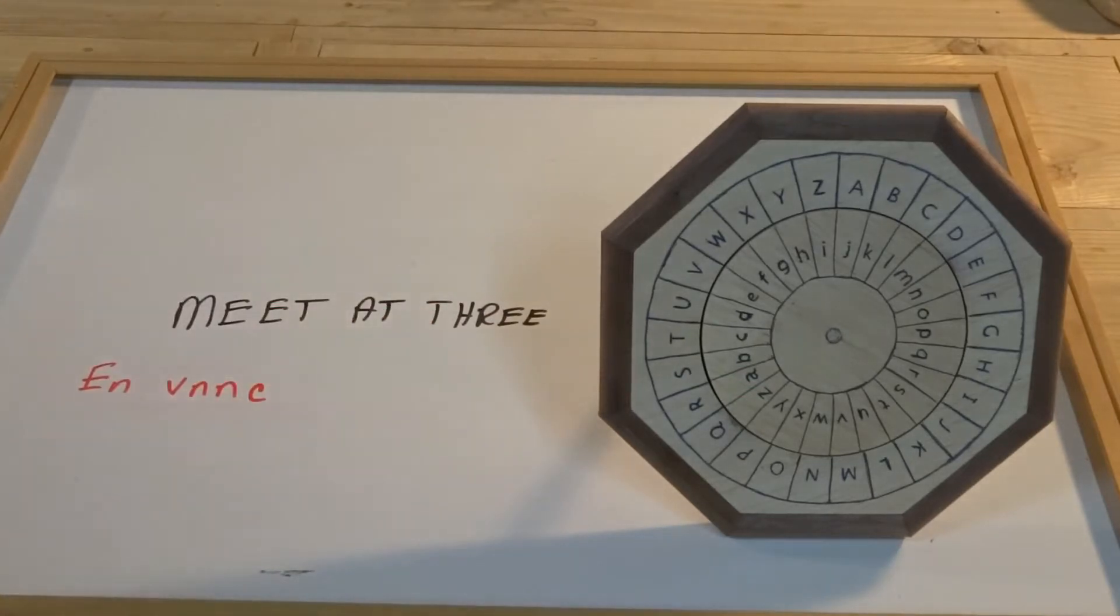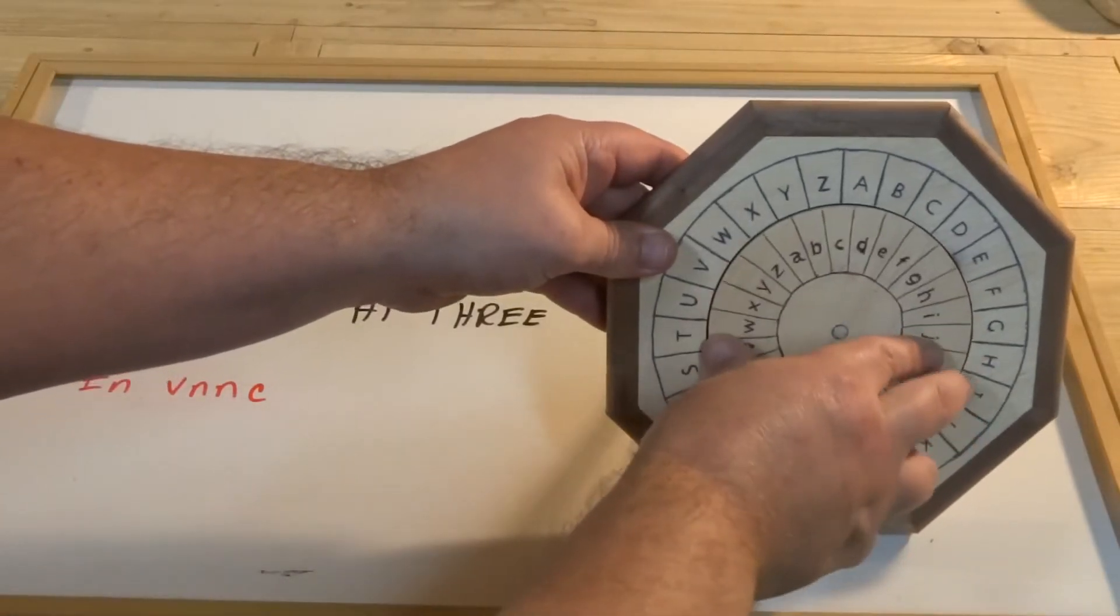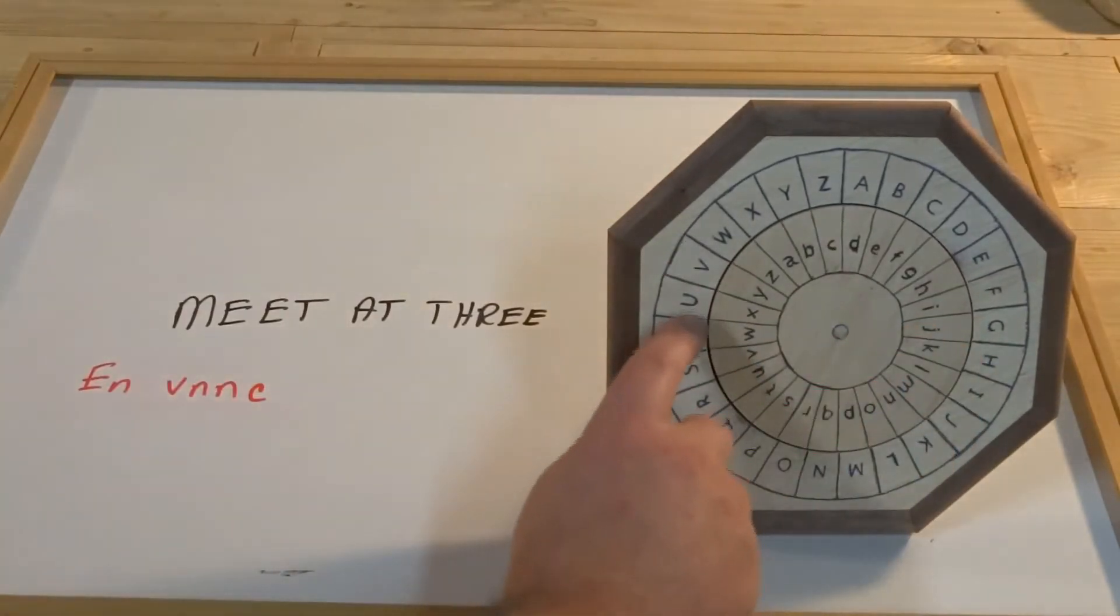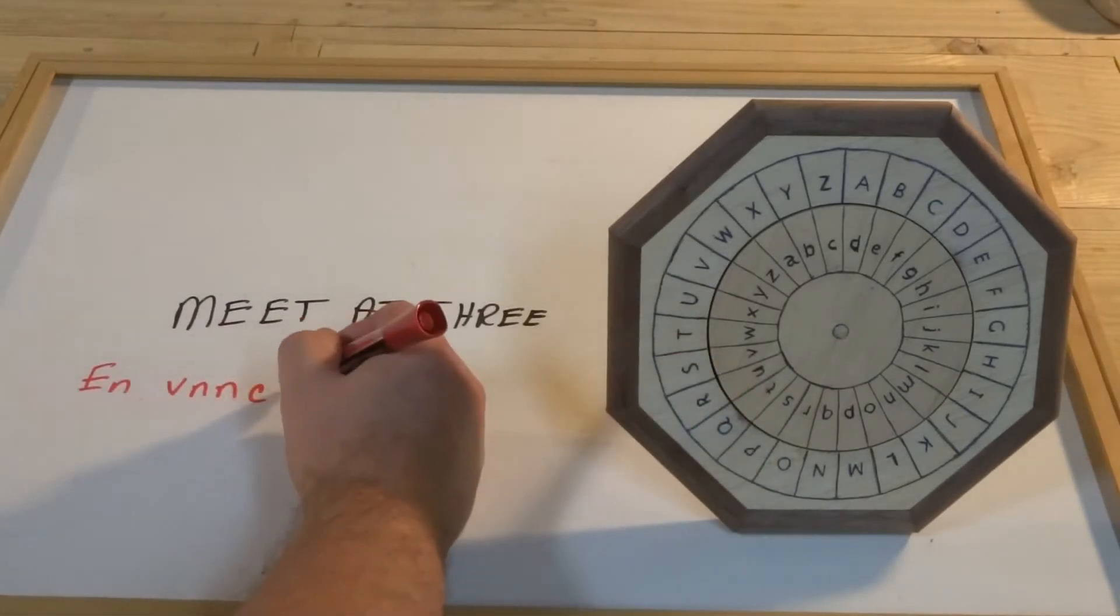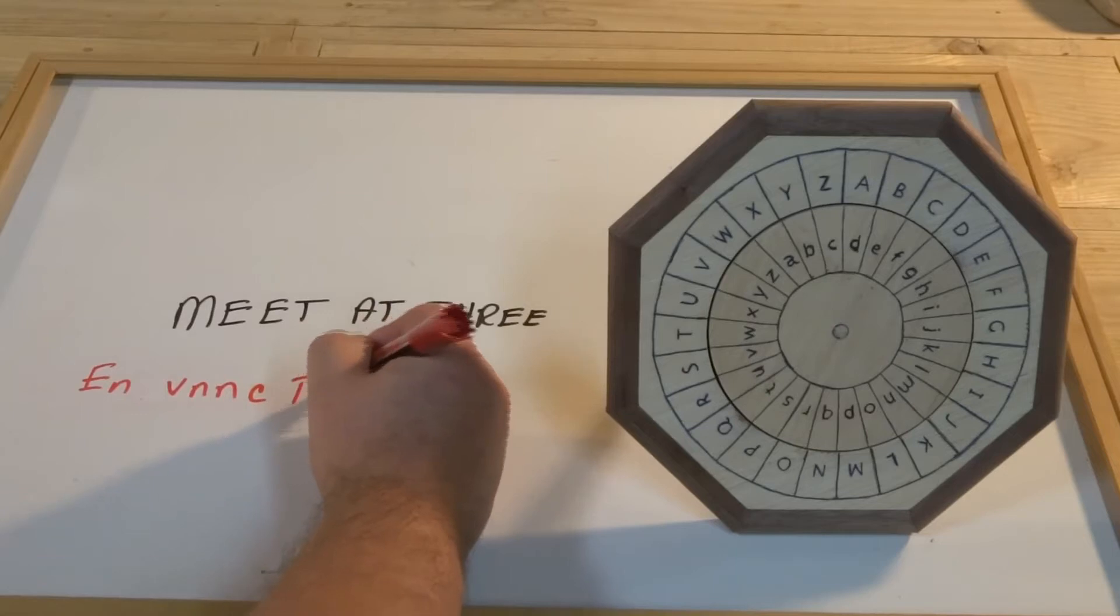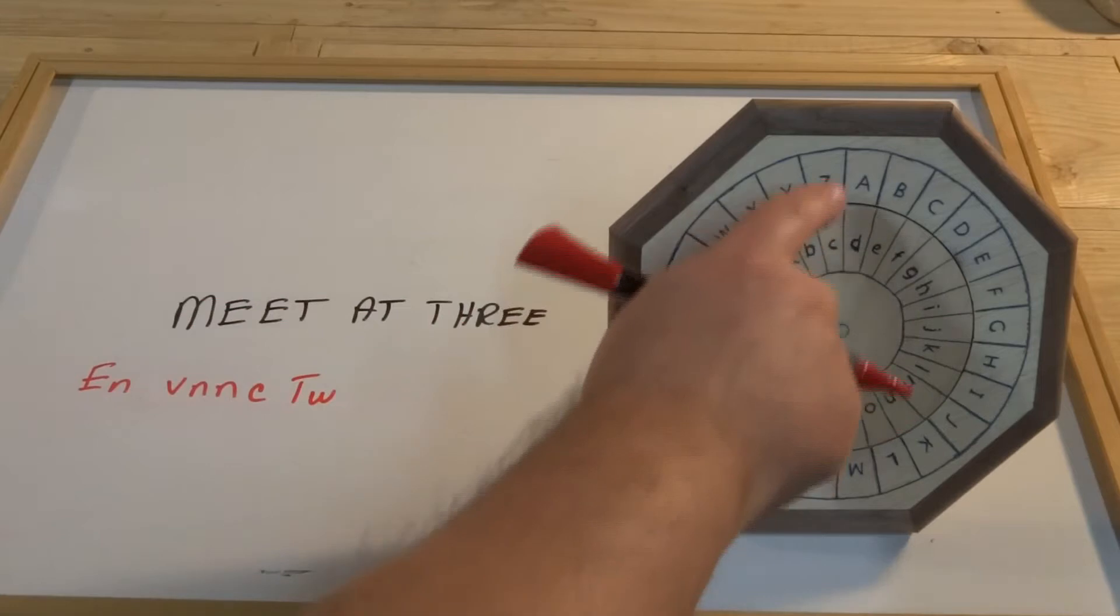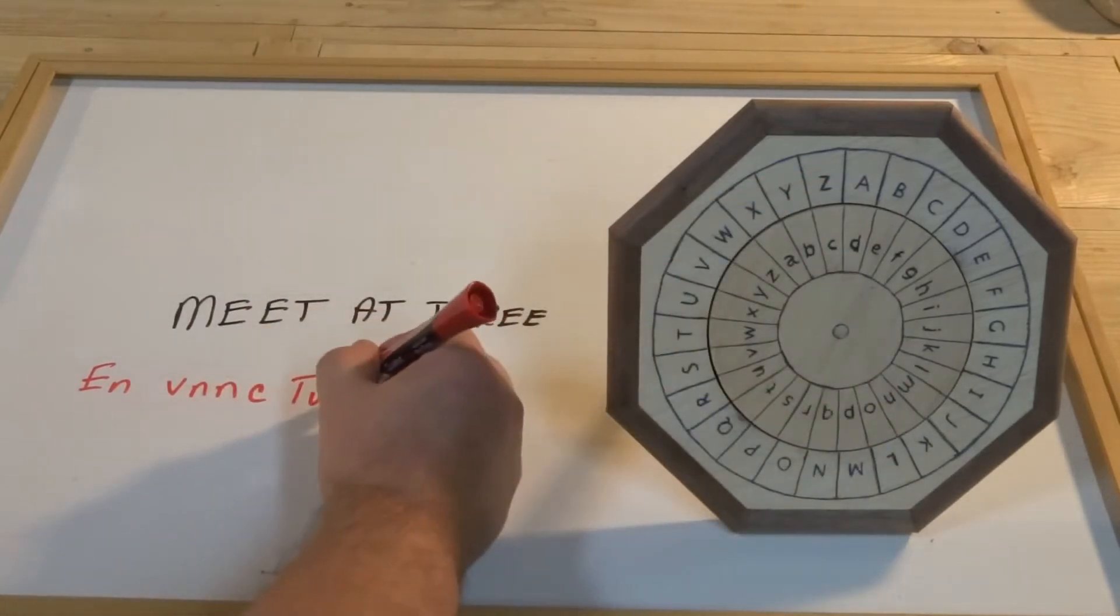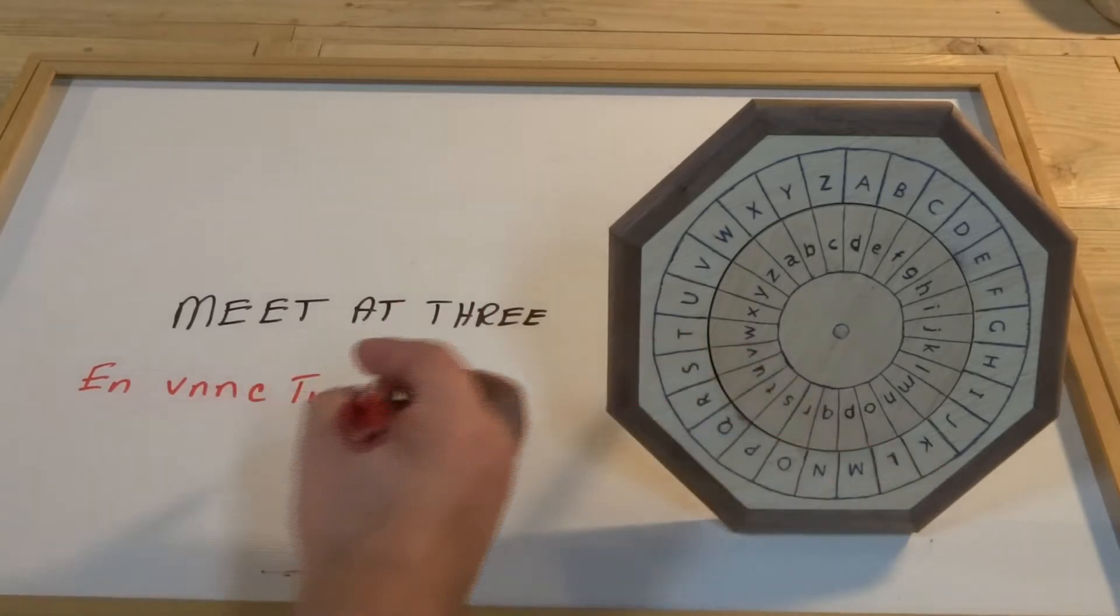Now instead of just continuing to encode the rest of the message, we'll go ahead and set a new index. How about if we use T and W? We write that down, and again with the uppercase, lowercase to tell us it's an index. Then we can encode the next word. So A is D, and T is W.